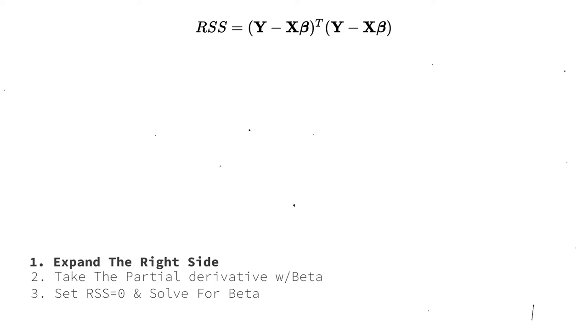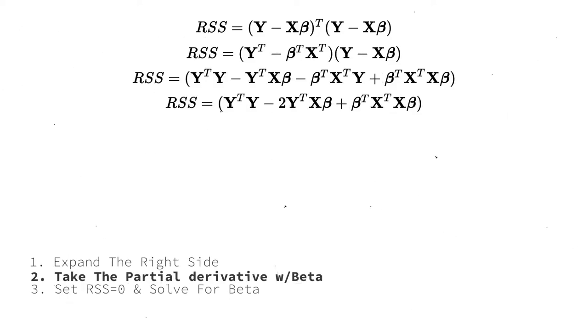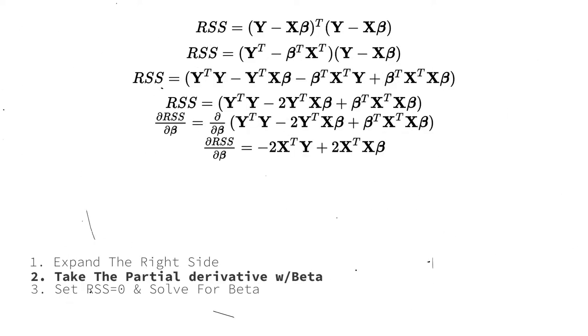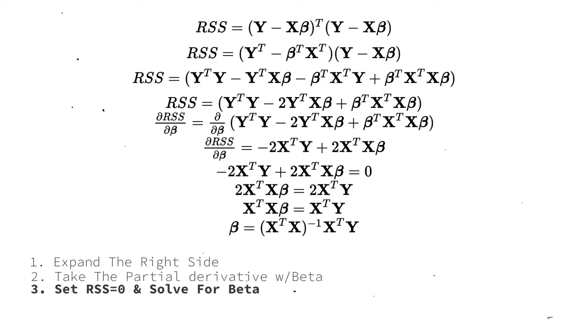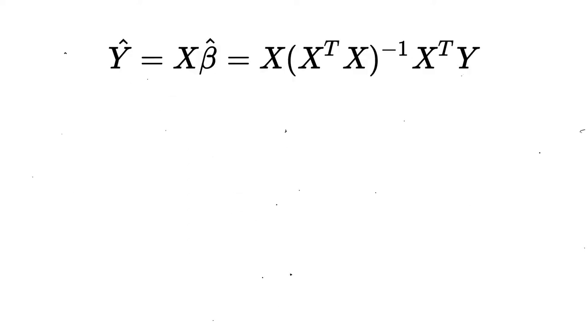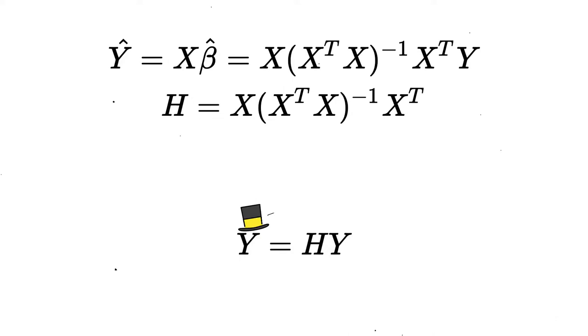There are three steps. First, expand the right-hand side. Second, take the partial derivative with respect to beta. Third, set the residual sum of squares equal to zero and solve for beta. The final result gives the betas. There is a special name given to the OLS equation with the solution to the beta plugged in. It is called the hat matrix. That is because this is the equation that puts the hat on the y. In this notation, putting a hat on the y upgrades it from being theoretical to an equation that has a solution. This is the equation that minimizes the errors.